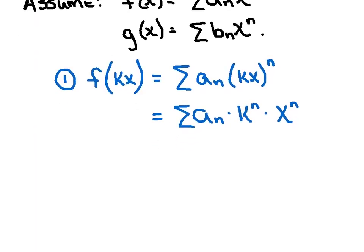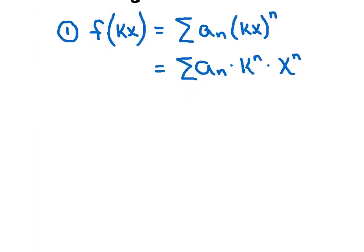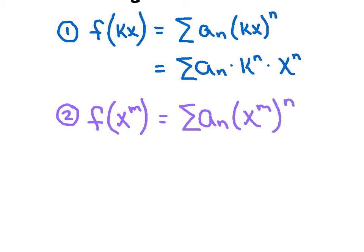Our second property says that if we want to evaluate f of x to the m power, very similarly to property number two, I'm allowed to strictly substitute the x to the m into x's place as such. And then we could clean it up just a whisker and say, well, anytime you have a power raised to a power, we're going to multiply those two exponents and get x to the mn.